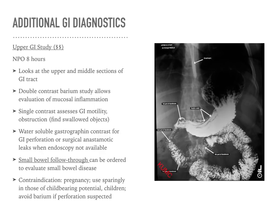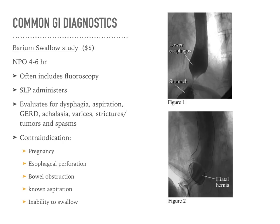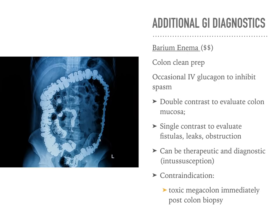The upper GI study gives us information about GI motility, gastric emptying, and mucosal inflammation, showing how well the bowel and stomach are performing. We can also do barium swallows to look for interruption or disruption between the esophagus and stomach, or obstructions. The barium enema can be both therapeutic and diagnostic — diagnostically it can identify obstructions in the large bowel, leaks, or fistulas; therapeutically it can help treat intussusception.